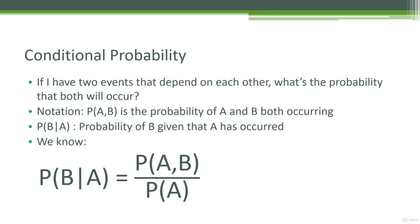The basic concept of conditional probability is that if I have two events that depend on each other, I can make a statement about the probability of that second event occurring given that the first event occurred. The notation is twofold: P(A, B) means the probability of both A and B occurring independently, and P(B|A) is the probability of B given that A has occurred. We tie this together with the equation: P(B|A) = P(A,B) / P(A).